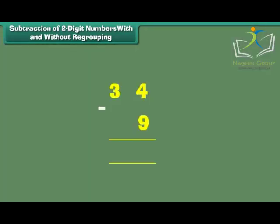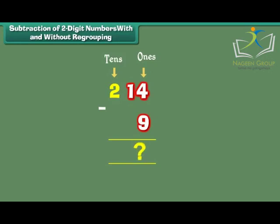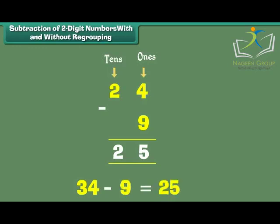What is 34 minus 9? 34 has 3 tens and 4 ones. We want to remove 9 ones. As 9 ones cannot be removed from 4 ones, we regroup 1 ten as 10 ones. Now we have 2 tens and 14 ones. We remove 9 ones from 14 ones. We are left with 5 ones and 2 tens. Therefore, 34 minus 9 is equal to 25.